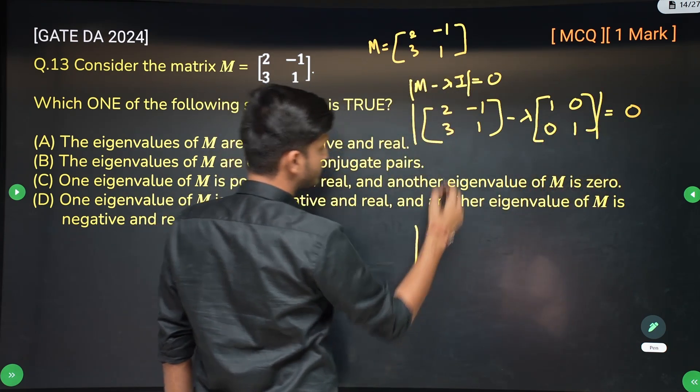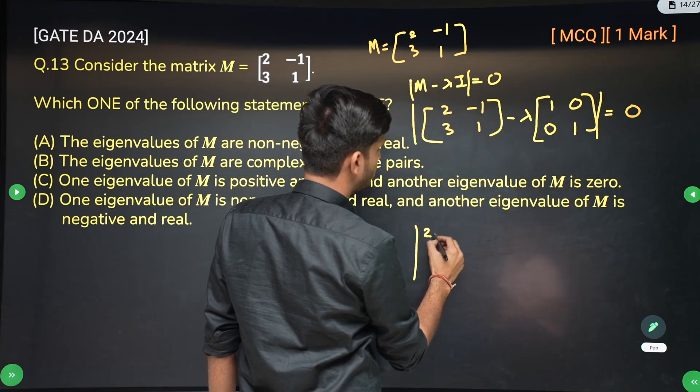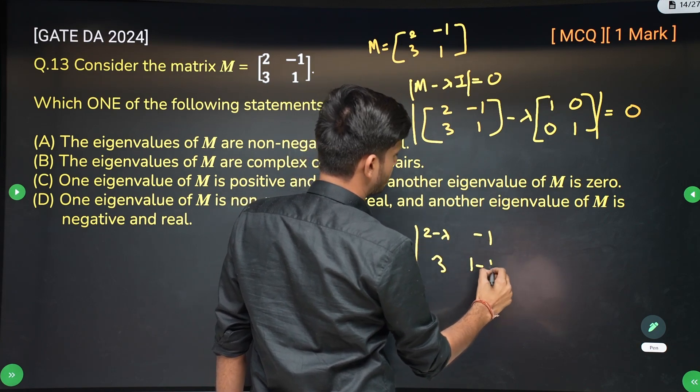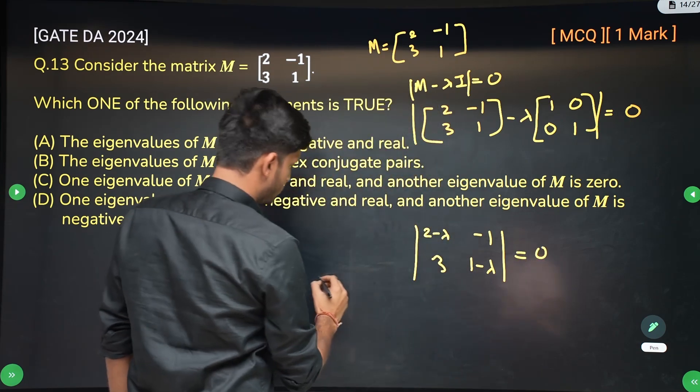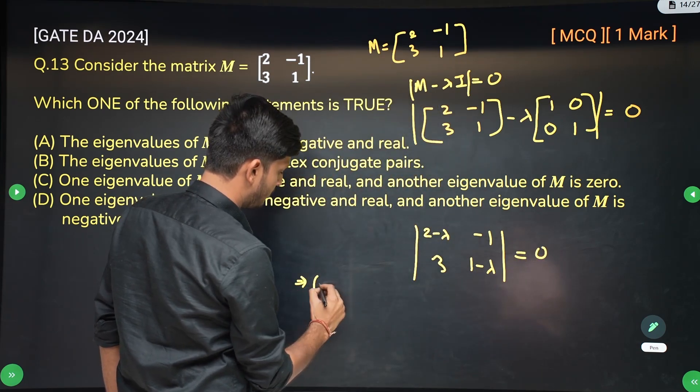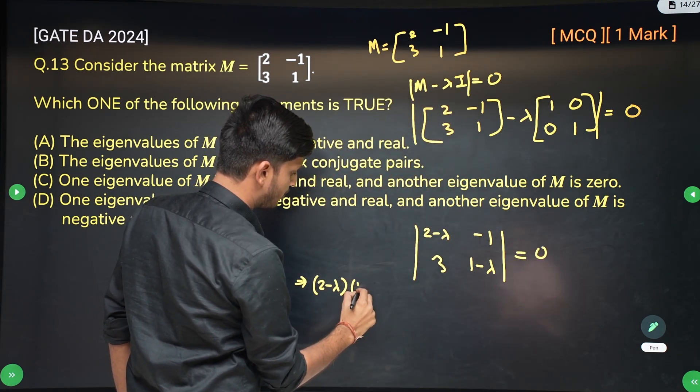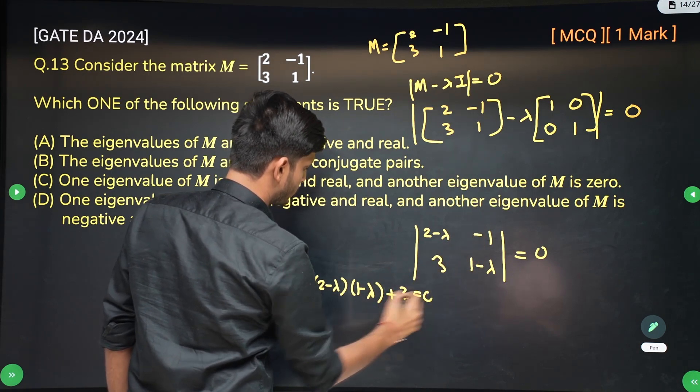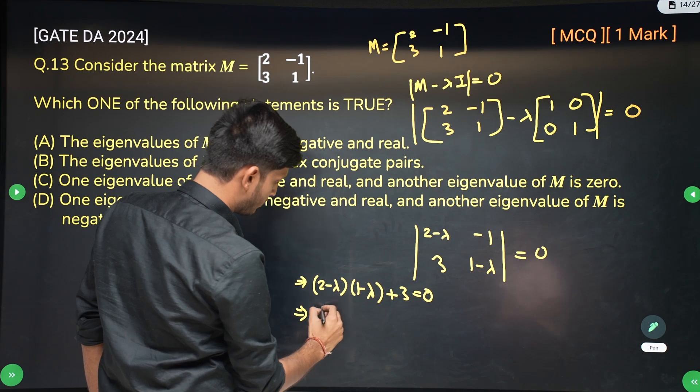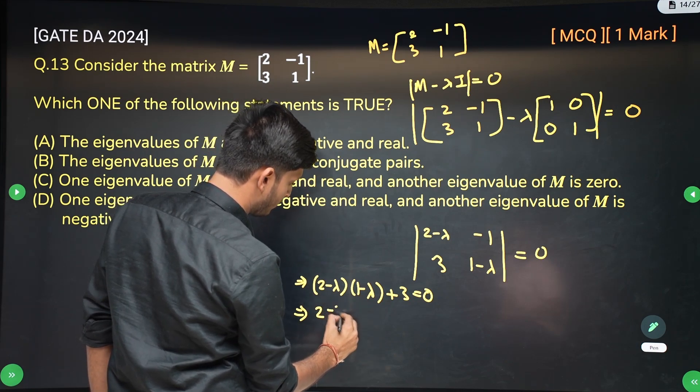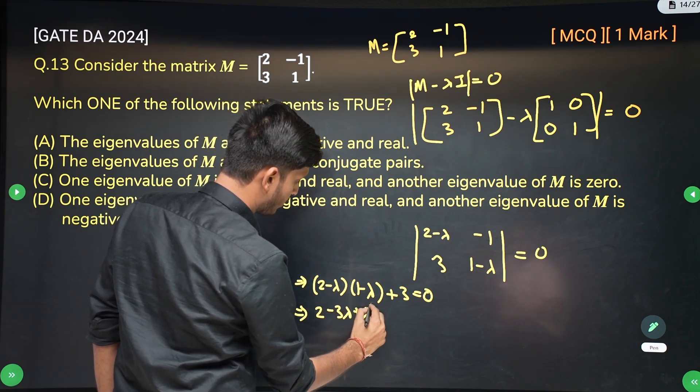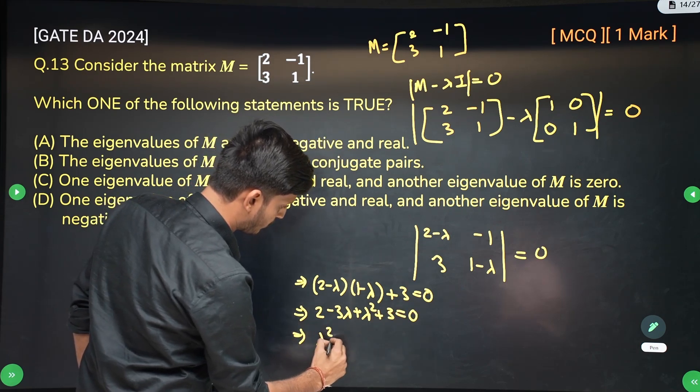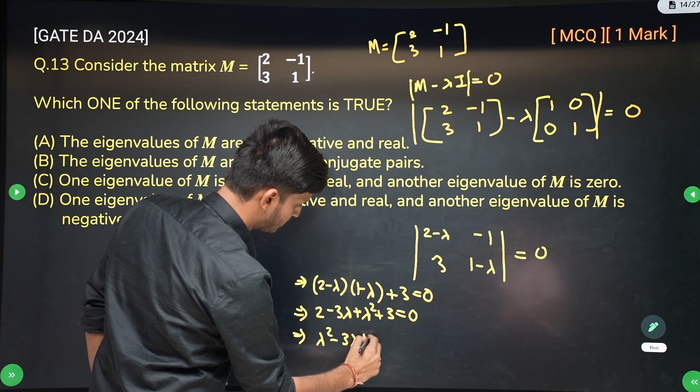So the determinant of this matrix will be what? Determinant of 2 minus lambda, minus 1 and then 3 and then 1 minus lambda. So this determinant is given to be 0. So it means that 2 minus lambda times 1 minus lambda and then minus minus 3 which means plus 3 is equal to 0. So the equation becomes 2 minus 2 lambda minus lambda minus 3 lambda plus lambda square plus 3 is equal to 0 which means lambda square minus 3 lambda plus 5 is equal to 0.